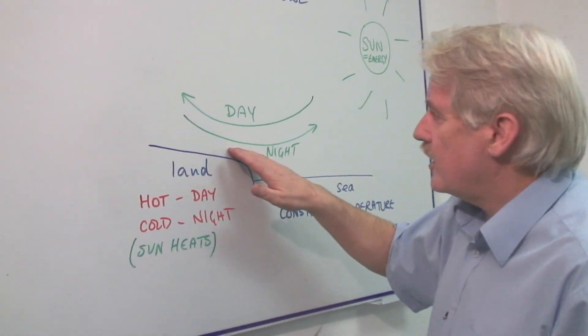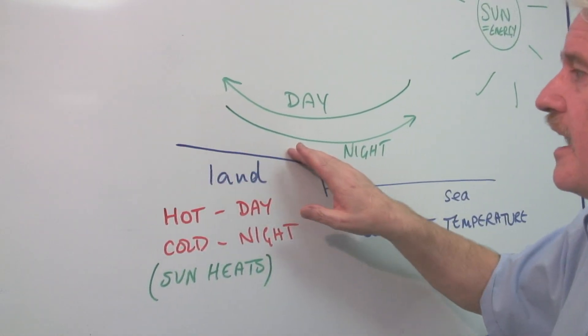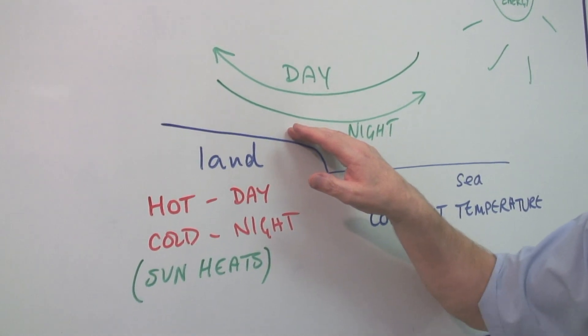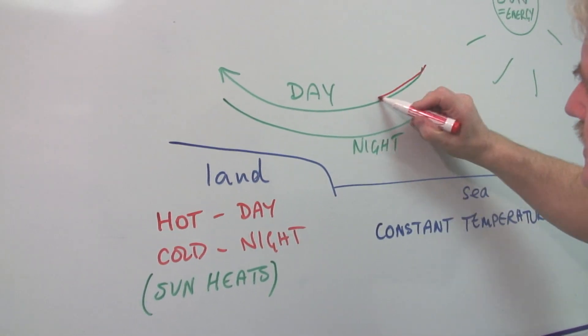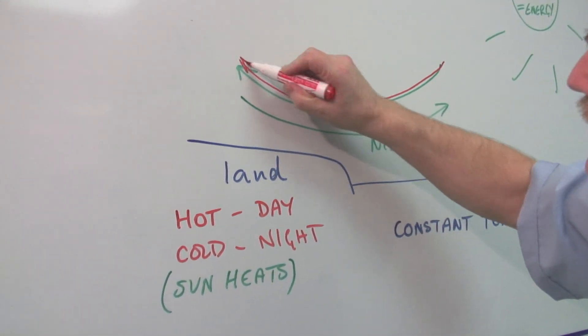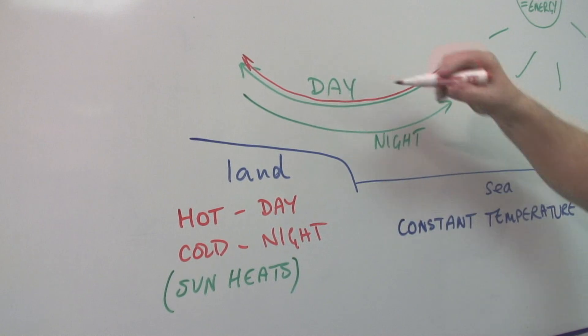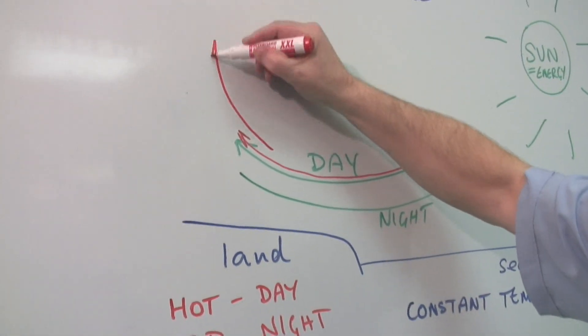If this area is hot, then the air here is hotter and less dense. So the air will tend to rise during the day. So this represents the daytime where the air rises above the land.